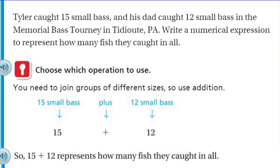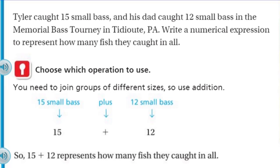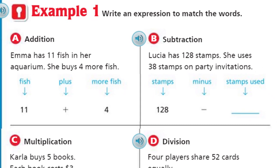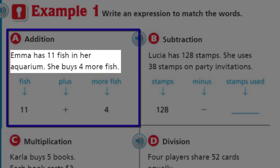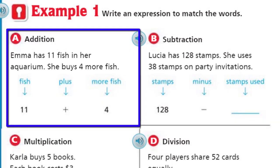Not 15 plus 12 equals 27. We're just looking for that numerical expression. Let's go to Example One: write an expression to match the words. For A, Emma has 11 fish in her aquarium and she buys 4 more fish. We can represent that with 11 plus 4, because there are 11 fish and she's adding 4 more. So 11 plus 4 is that expression.